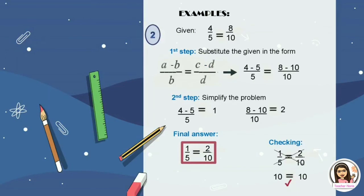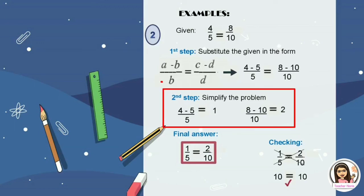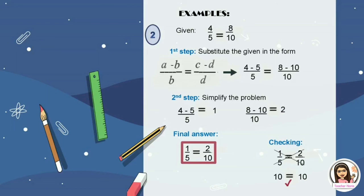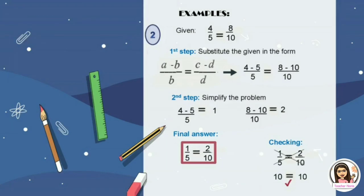Another example using subtraction: 4 over 5 equals 8 over 10. First step: substitute into the form a minus b over b equals c minus d over d, giving 4 minus 5 over 5 equals 8 minus 10 over 10. Second step: simplify — 4 minus 5 equals 1, and 8 minus 10 equals 2. Final answer: 1 over 5 equals 2 over 10. Checking: 1 multiplied by 10 equals 10, and 5 multiplied by 2 equals 10. Therefore, our answer is in proportion.